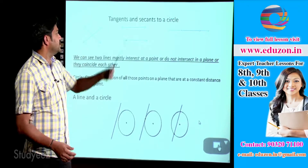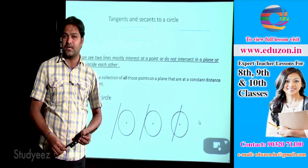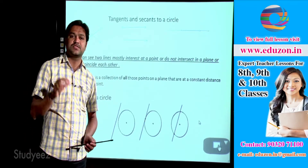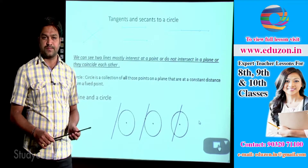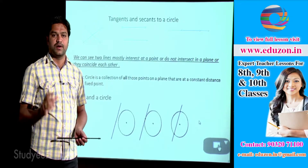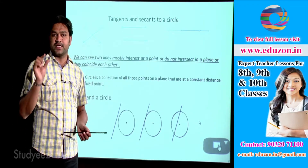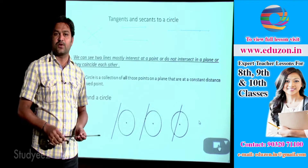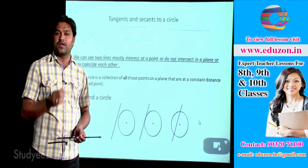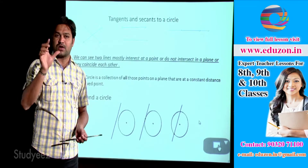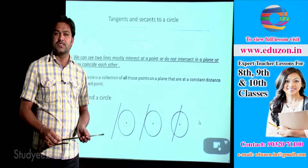Today we will discuss tangents and secants to a circle. First we will discuss tangents. A line that touches a circle at only one point is called a tangent to the circle.